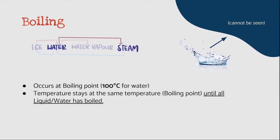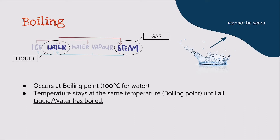Moving on to boiling. Boiling involves the gain of heat when liquid water is converted into steam, which is gas. Boiling occurs at the boiling point of a substance, which is 100 degrees Celsius in the case of water. Like melting, temperature stays at the boiling point until all liquid has boiled. In fact, even the steam that is invisible to the eye near the boiling liquid water would remain at 100 degrees Celsius until all the liquid water has boiled.